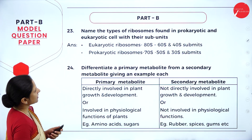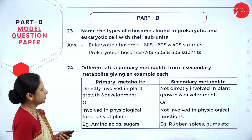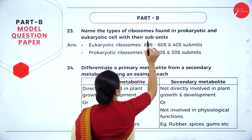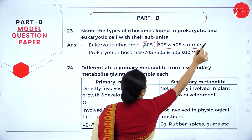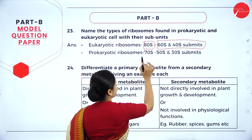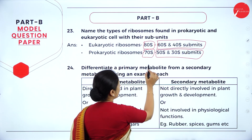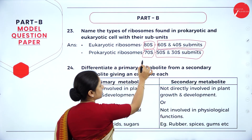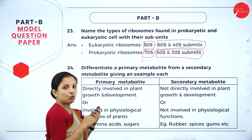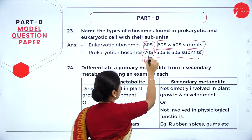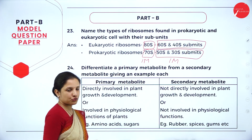Question 3: name the types of ribosomes found in prokaryotic and eukaryotic cells with their subunits. Eukaryotic ribosomes are 80S, made up of 60S and 40S subunits. Prokaryotic ribosomes are 70S, made up of 50S and 30S subunits. Each correct ribosome type with subunits carries half a mark, totalling 2 marks.